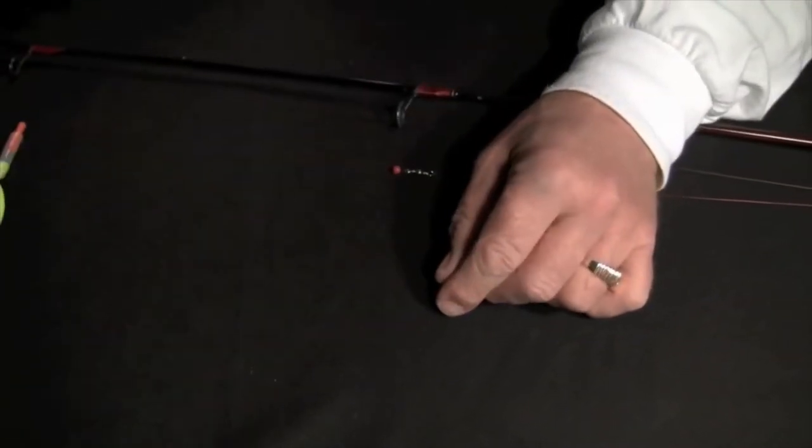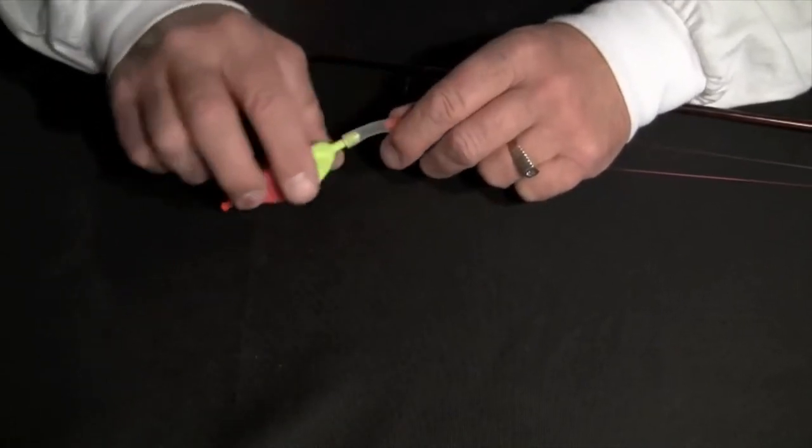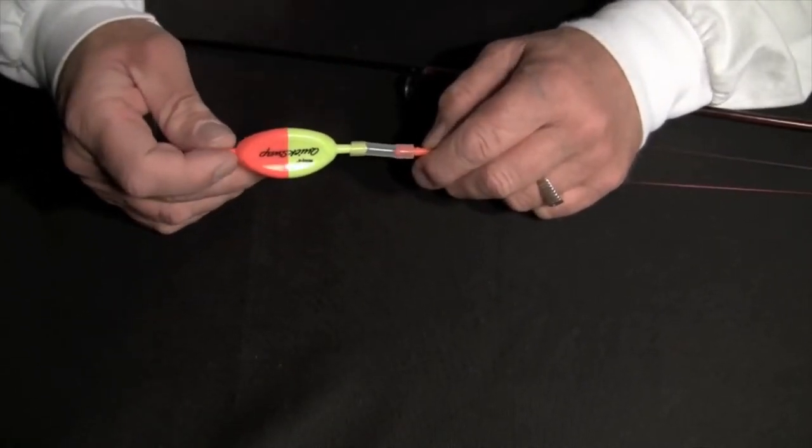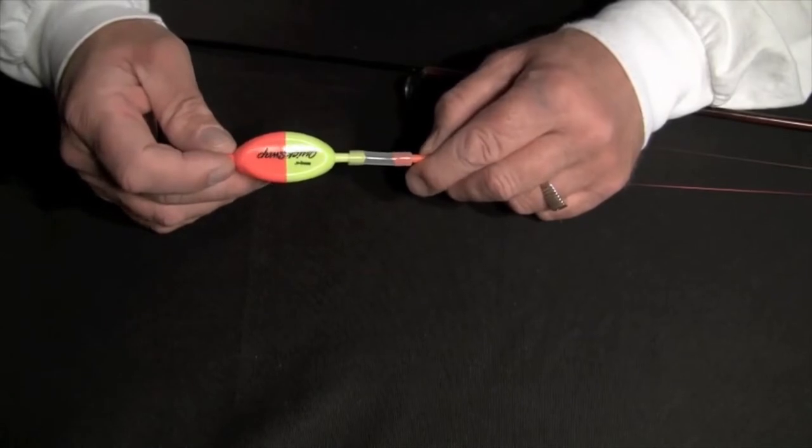We're going to show you how our new one works. What we have here is what we call the Wing-It Quick Swap slip bobber. You can use it fixed or you can use it slip. I'll show you that in a minute.